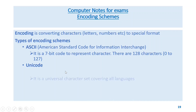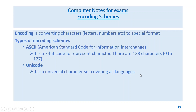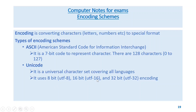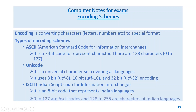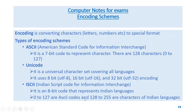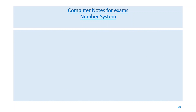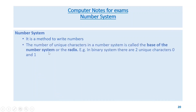Unicode is a universal character set covering all languages; it uses 8-bit UTF-8, 16-bit UTF-16, and 32-bit UTF-32 encoding. ISCII — Indian Script Code for Information Interchange — is an 8-bit encoding where codes 0–127 are ASCII characters and 128–255 are characters of Indian languages.